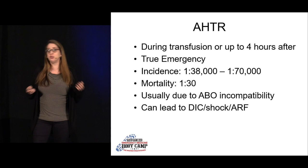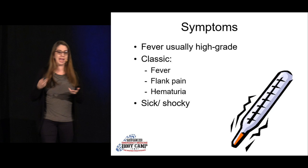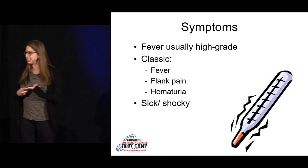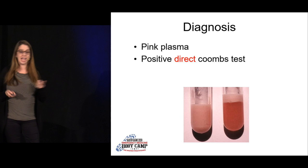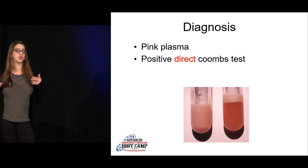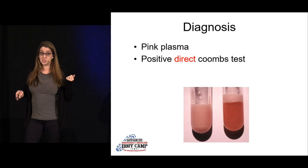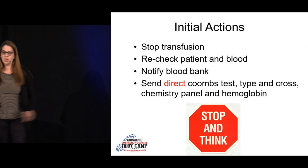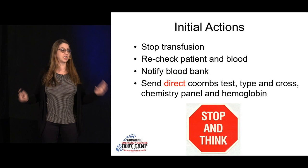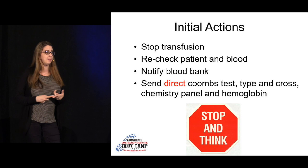The reaction is caused by recipient antibodies inducing hemolysis of donor RBCs — usually due to human error. It can lead to DIC, shock, acute renal failure, and death. Symptoms include high-grade fever, flank and back pain, hematuria, headache, and altered mental status. The first thing to do is stop the transfusion. To diagnose, spin blood and examine the plasma — it will appear pink due to hemolysis rather than clear. Also send a direct Coombs test.